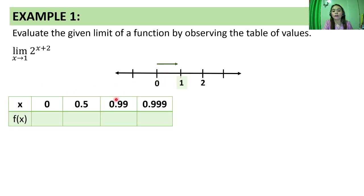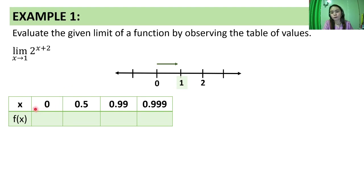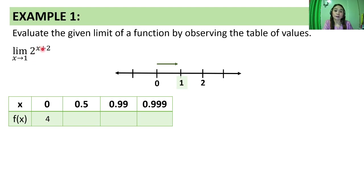From the left: x values are 0, 0.5, 0.99, 0.999 — values approaching 1 from the left. We substitute each x value into the function. For x = 0: 2 raised to 0 plus 2 gives 2 squared, which equals 4. We do this for all values up to 0.999. Pakicompute, and then tingnan natin kung pareho tayo nang makukuha.